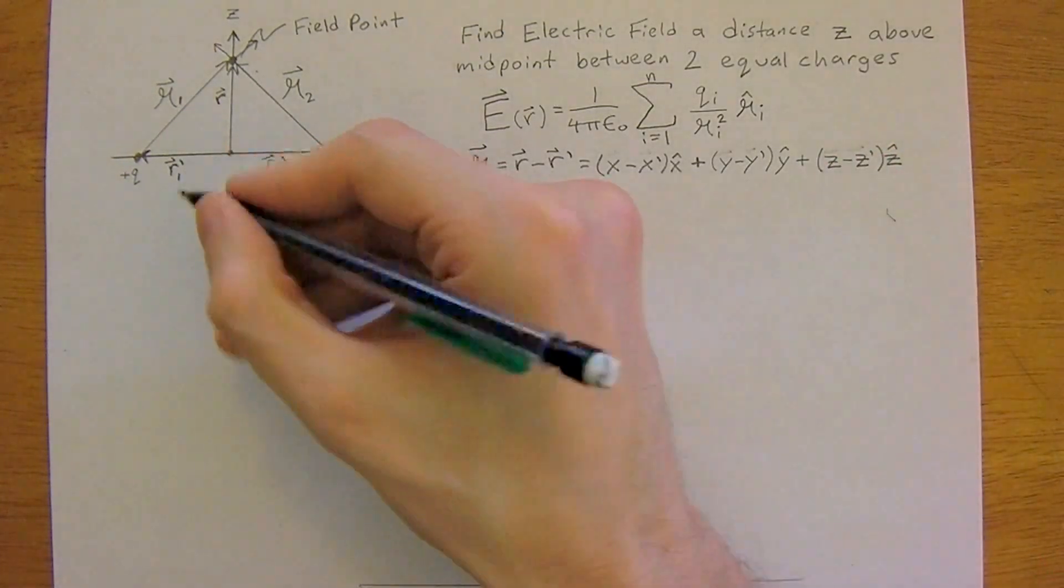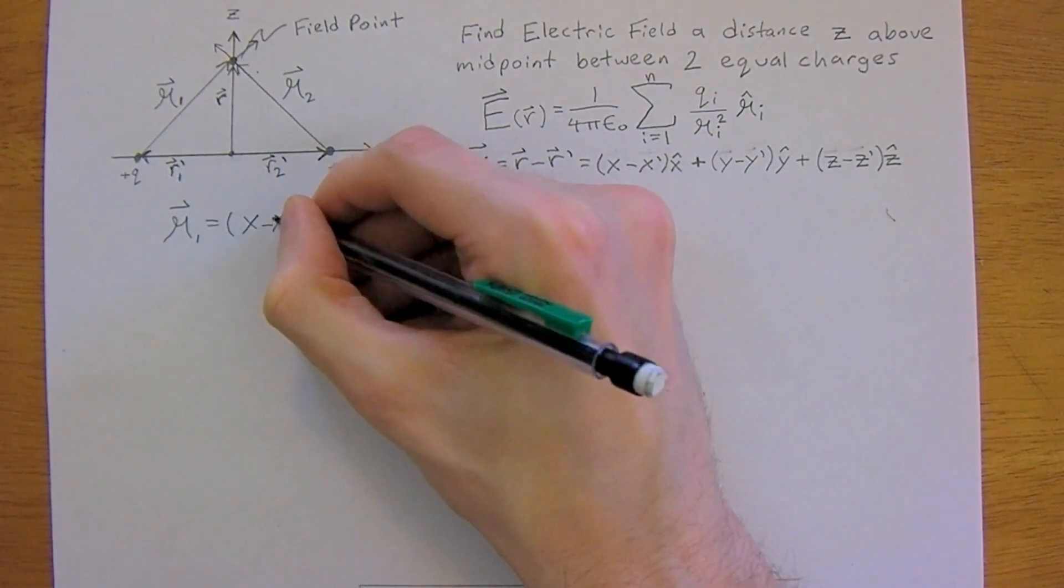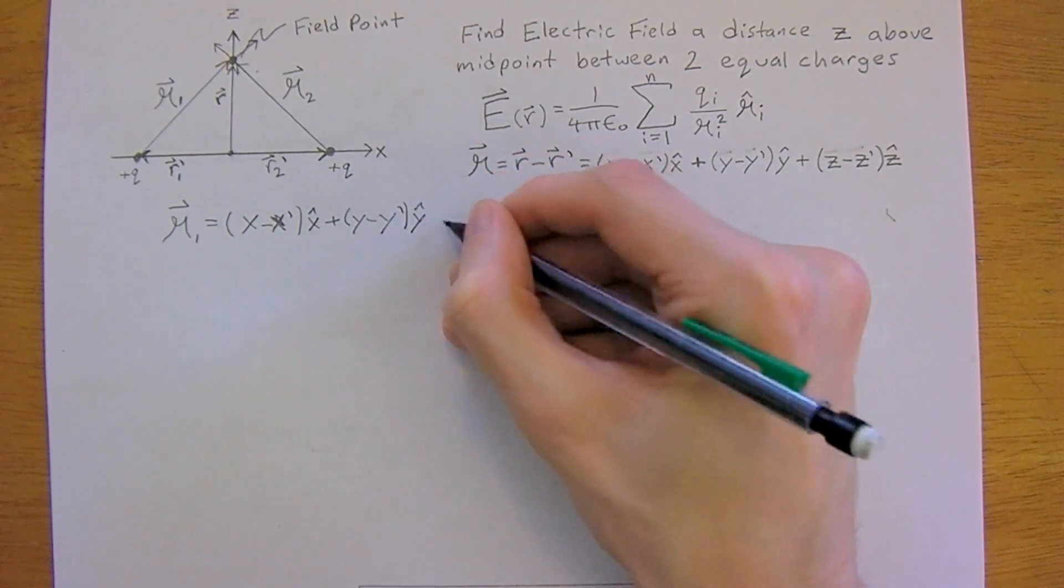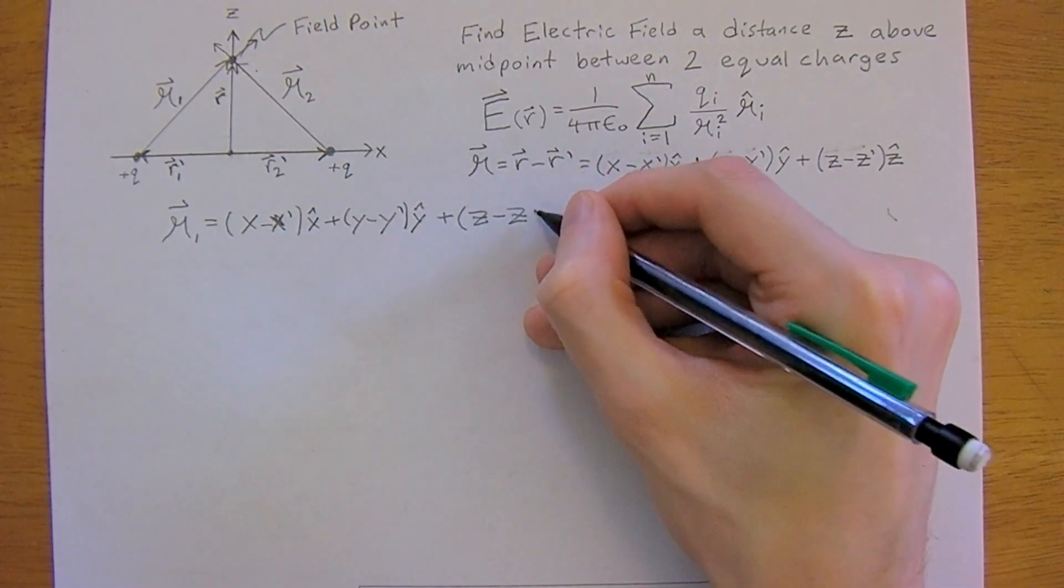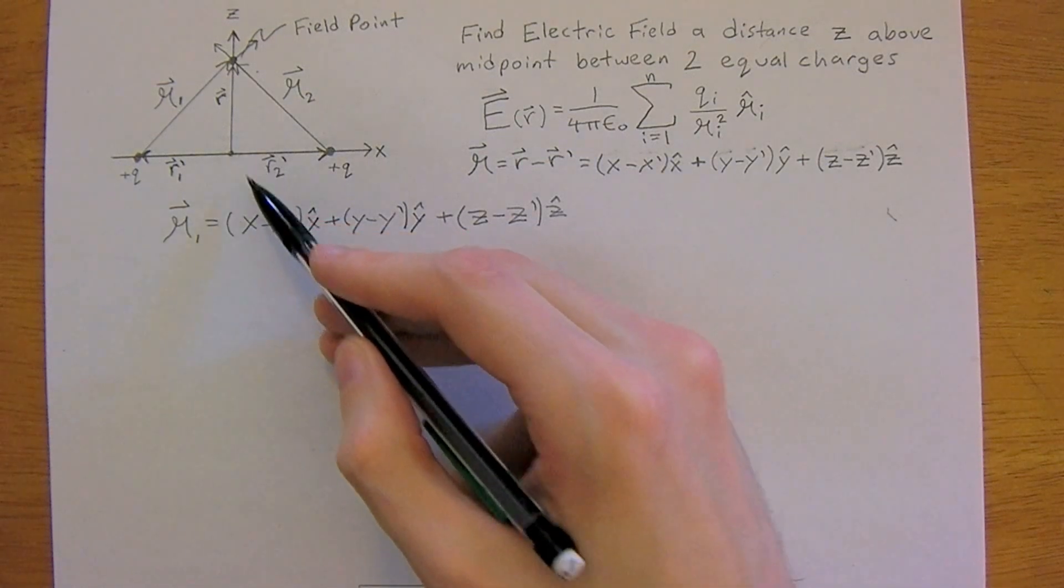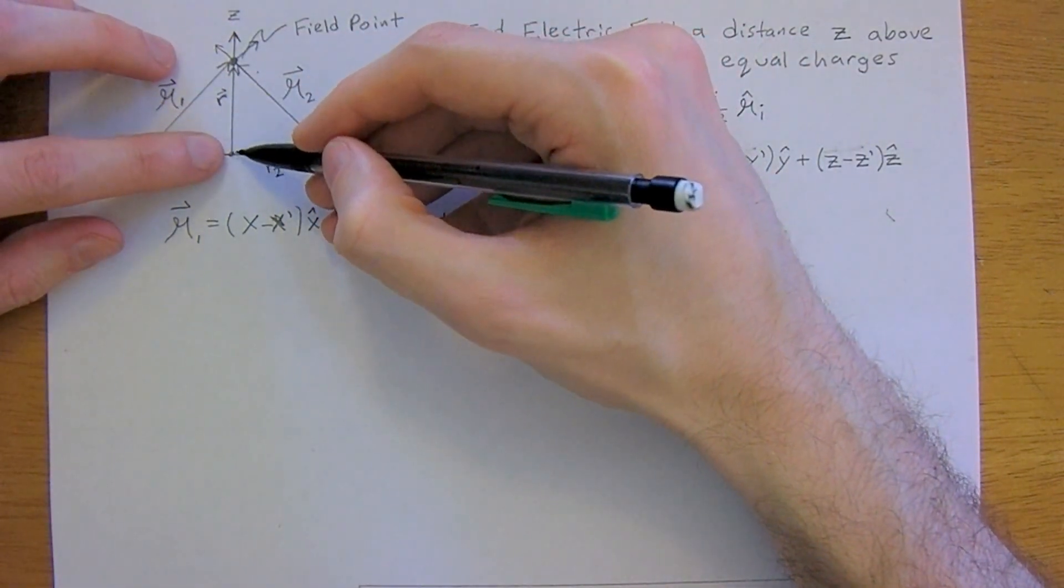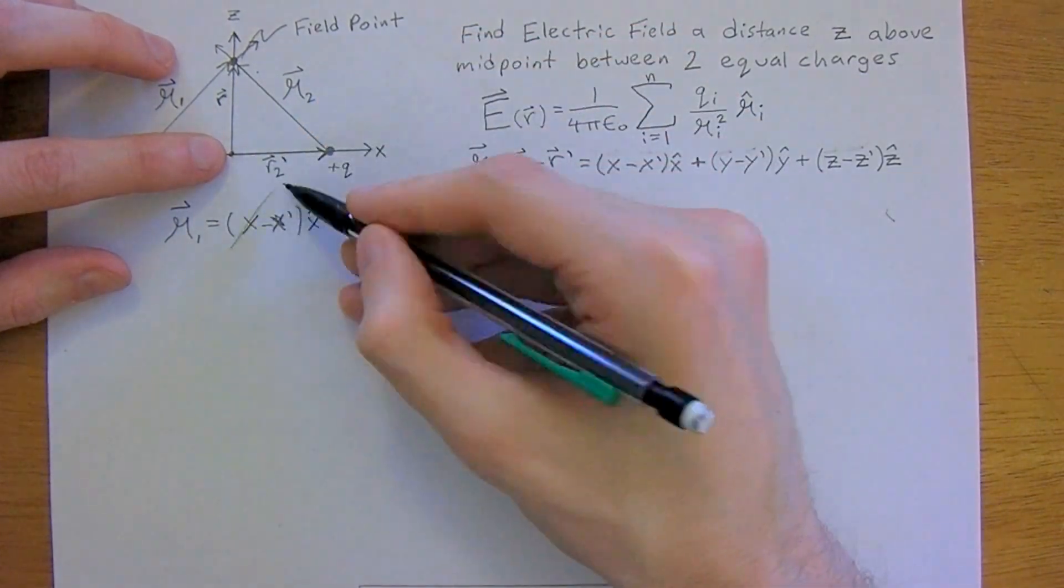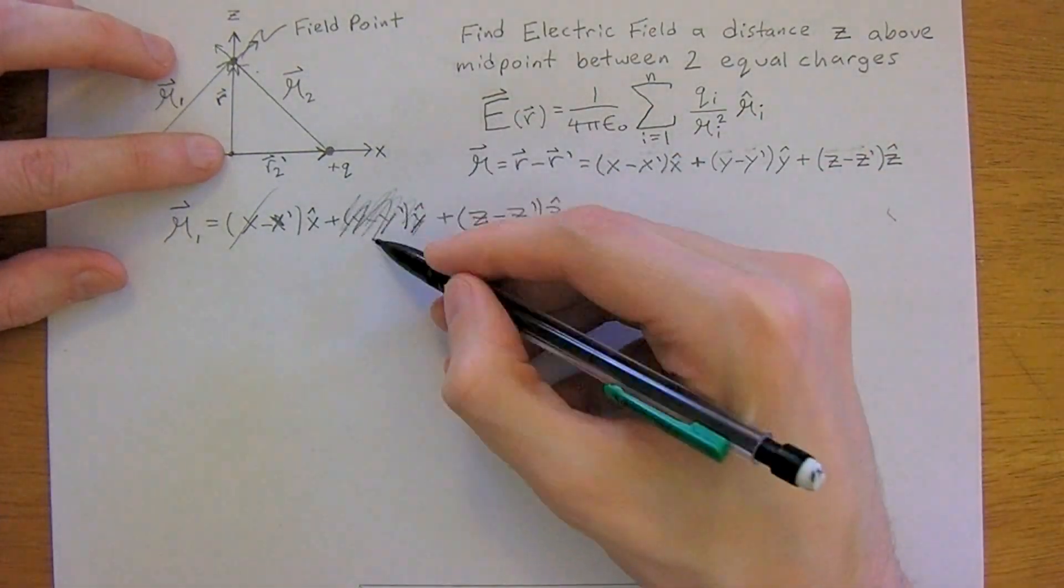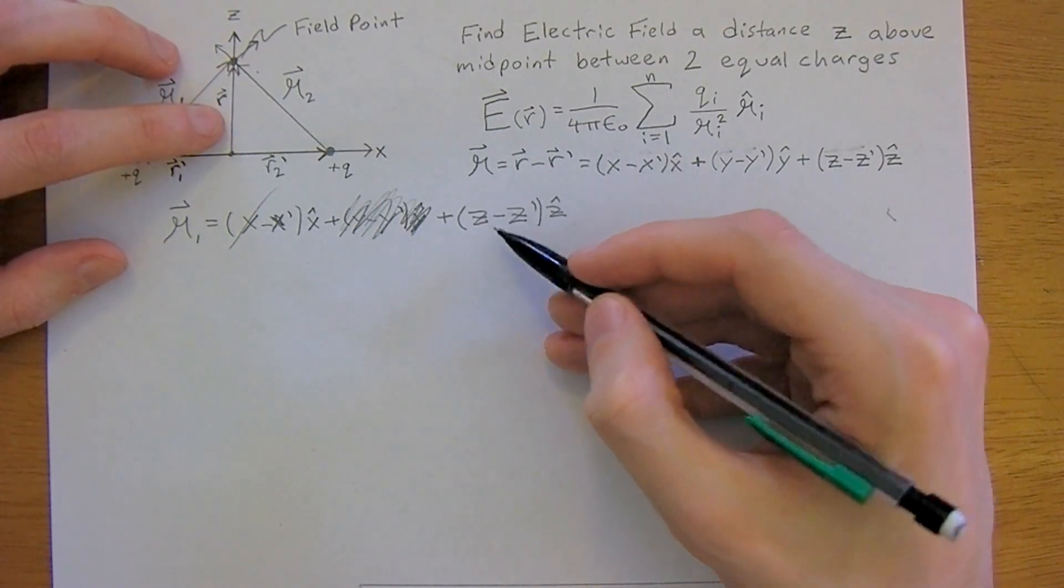So r1 is equal to x minus x0 x-hat plus y minus y0 y-hat plus z minus z0 z-hat. So let's assess for r1 now. Let's look at just going towards the field point, so the unprimed. So we're looking at this r now, and we know that at this point x is equal to 0, so we can cross that off. There is no y-coordinates at all on this, because we just have the x and z-axis, we can cross those off. And is there a z component? Yes, there is, so we're at some distance z up here. So we'll leave that in.